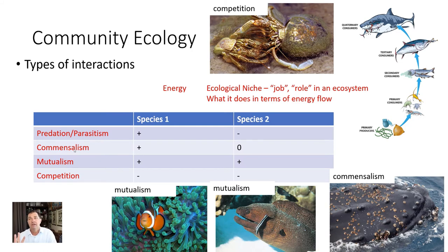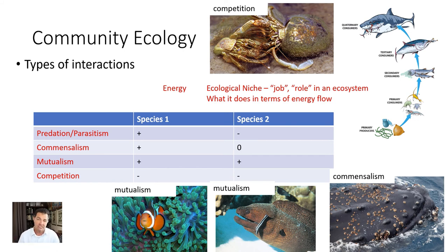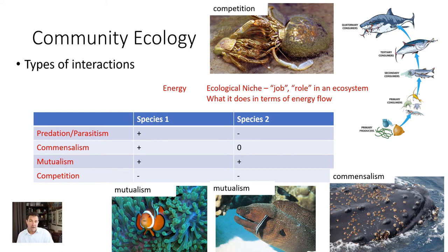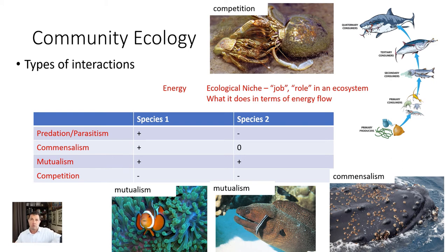There are basically four different types of interactions we can categorize between any two species. The first is predator-prey, which is a good example from the food chain we just discussed — one organism eats another. In that scenario, the organism that gets eaten is losing and the one that did the eating is gaining. In a predator-prey or parasitism scenario, we put a plus by species one (the predator) and a minus by species two.